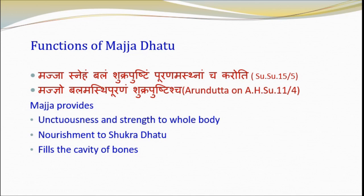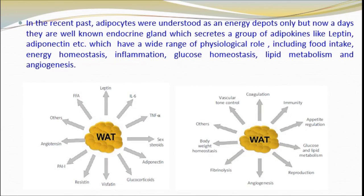Medha and Majja Dhatu have been considered to play an important role in nourishment of bone and reproductive tissues. Their imbalance — in states of Medhavriddi or Majja Kshaya — affects functioning of bone tissue and produces abnormalities. These functions might be indicative of the role of adiponectin and leptin secreted by adipocytes in bone remodeling and reproductive functions. In short-term conditions, bone growth is inhibited due to increased apoptosis and decreased proliferation, while in long-term regulation, bone formation is increased by adiponectin. In the recent past, adipocytes were understood as energy depots only, but now adipocytes secrete a group of adipokines like leptin, adiponectin, etc., which have a wide range of physiological roles including food intake, energy homeostasis, inflammation, glucose homeostasis, lipid metabolism and angiogenesis.